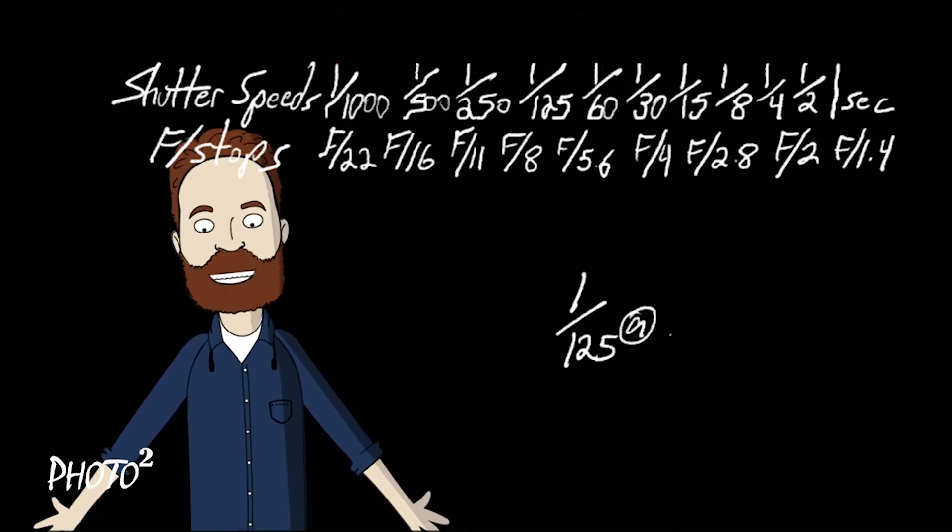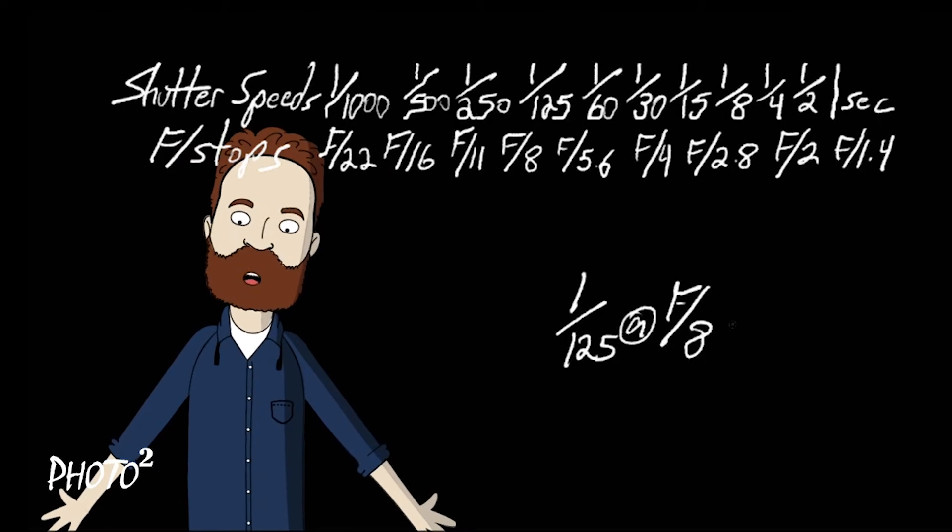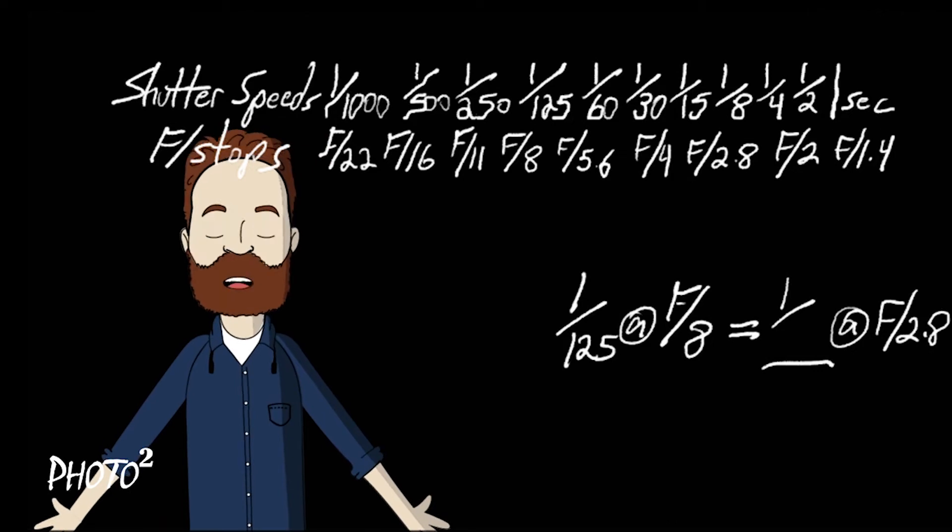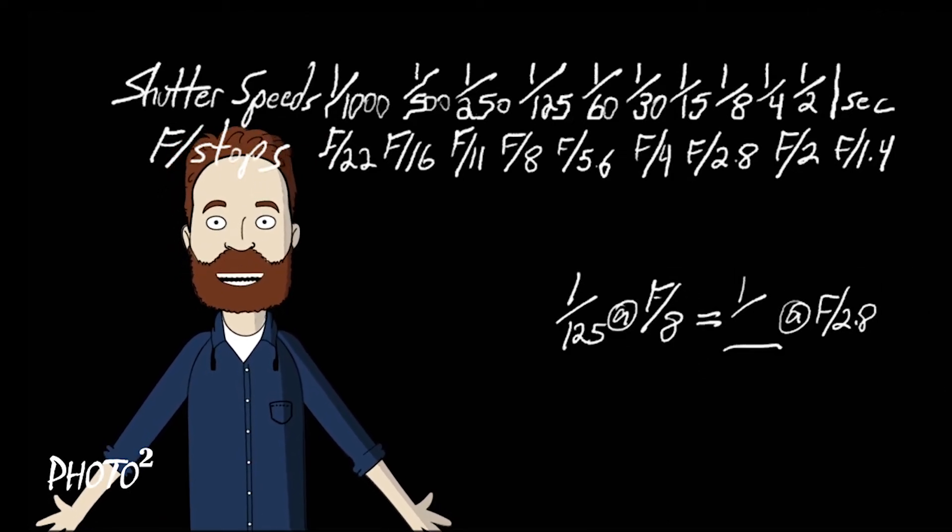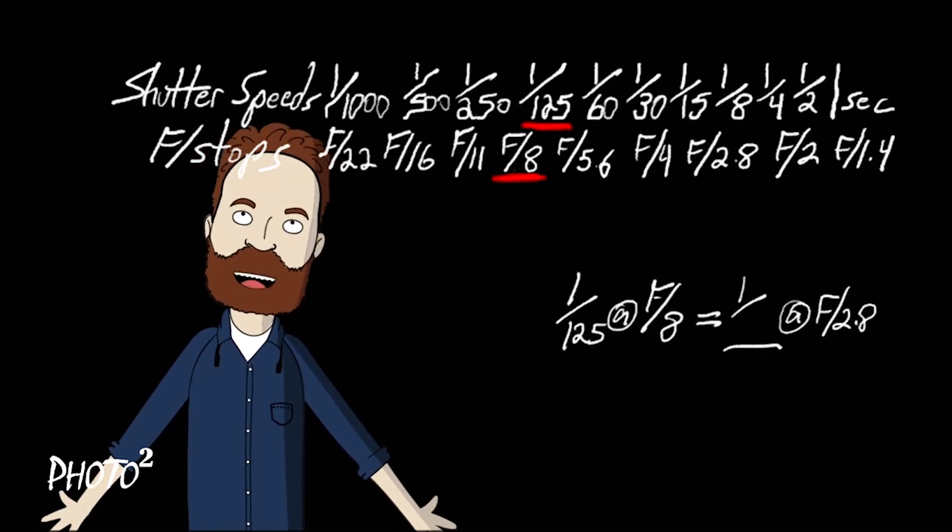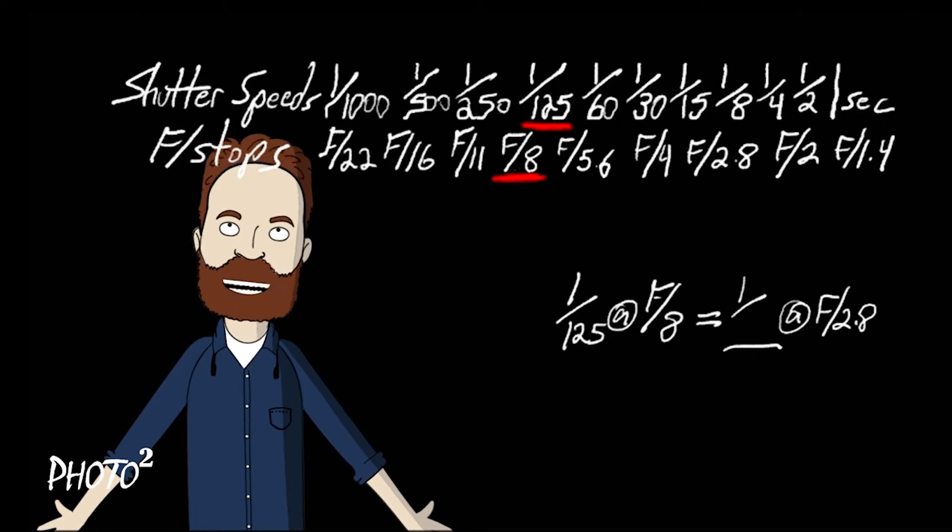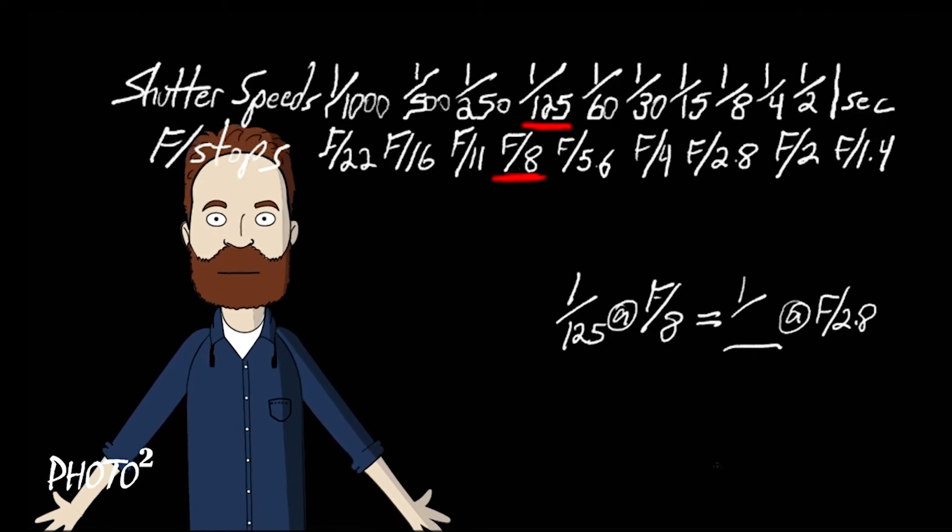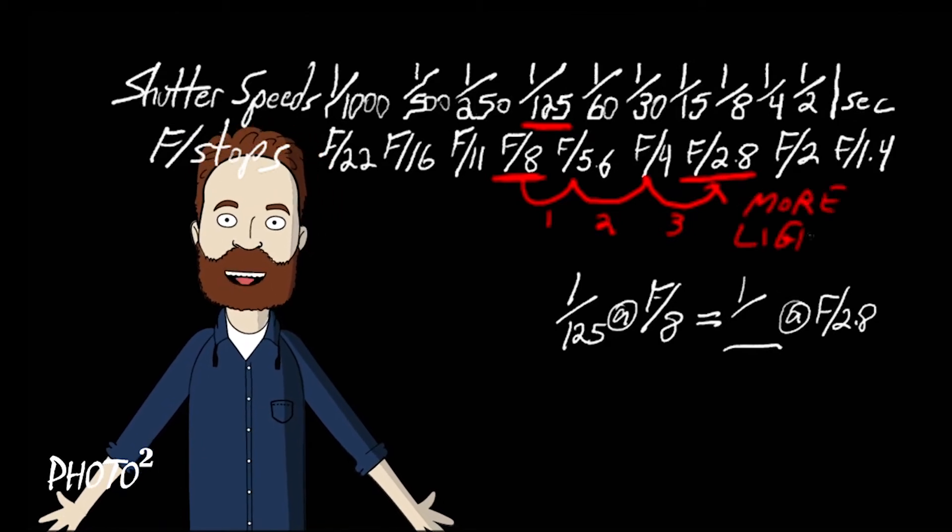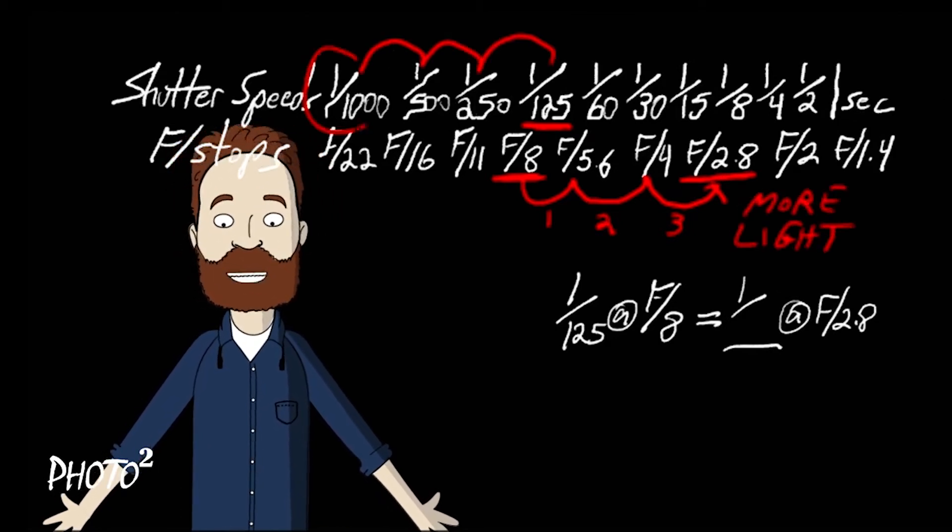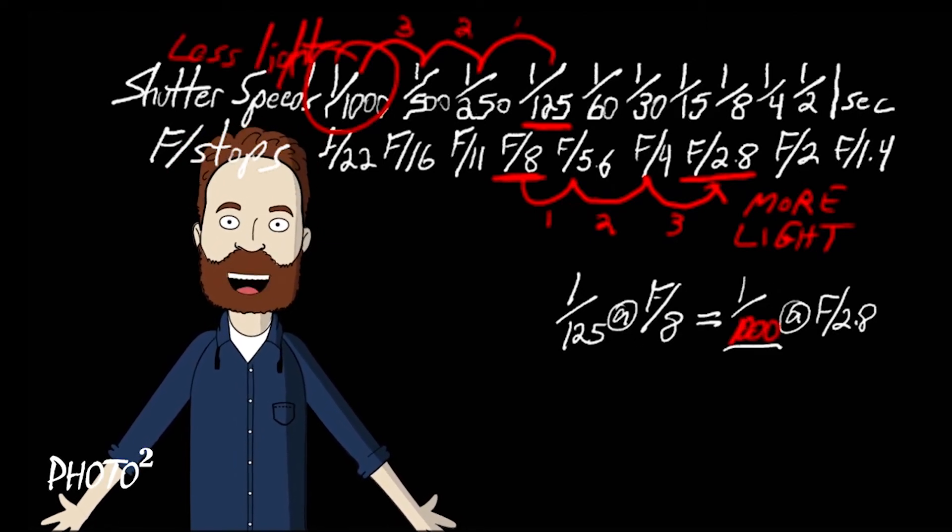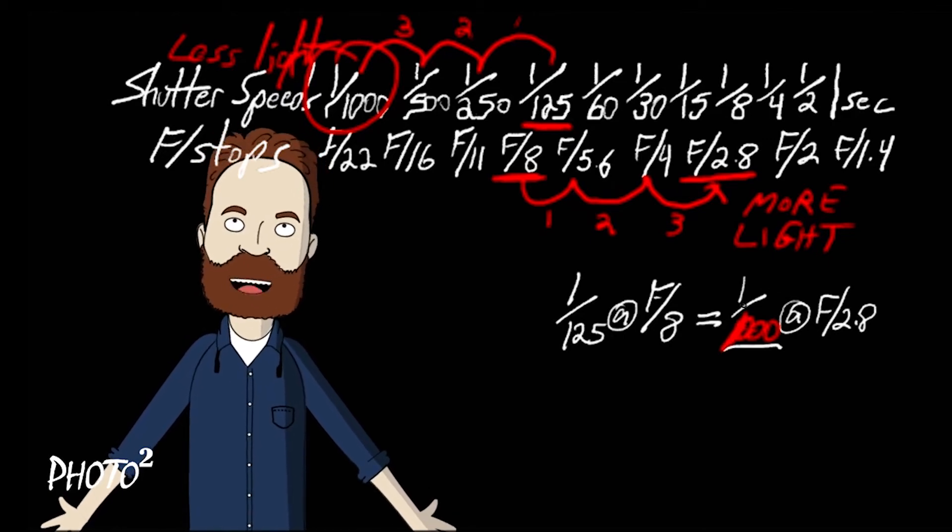Let's go to the next one. One one-twenty-fifth at f/8 to be kind of middle of the road. And let's say we want now the opposite, we want only one thing in focus, so we're going to choose f/2.8. Let's mark them. So one twenty-fifth at f/8 and we're moving to f/2.8. How many stops is that? Remember you count the bumps, you count each movement as one full stop. So one, two, three towards more light, right? Plus three stops more light, so we need three stops less light. So one one-thousandth at f/2.8 is the same exposure as one twenty-fifth at f/8, but I controlled how my camera recorded the depth of field.